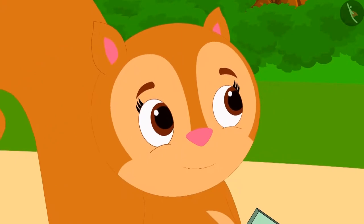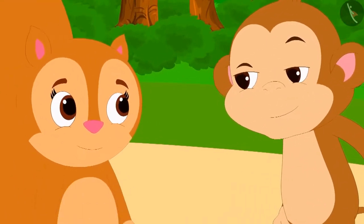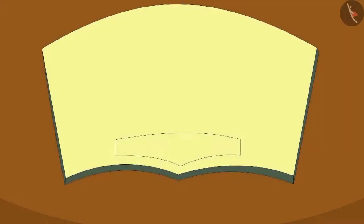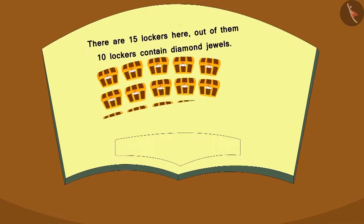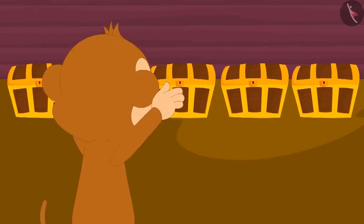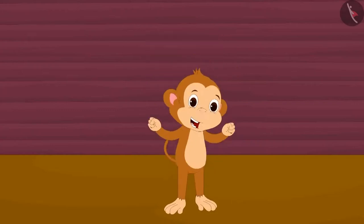The next day, Chanda tells Babban about her magic book. Out of greed, Babban borrows the book from Chanda for a day. Chanda gives it to him happily. Babban opened the book very excitedly and thought he would make a picture in the book and write the question. Babban made this picture, and below it wrote: There are 15 lockers here. Out of those, 10 lockers contain diamond jewels. How many lockers are empty? The moment Babban wrote the question, five lockers appeared in front of him. Babban went mad with happiness.